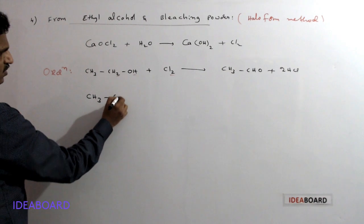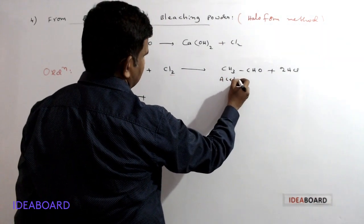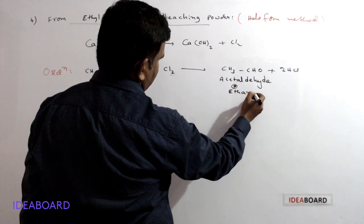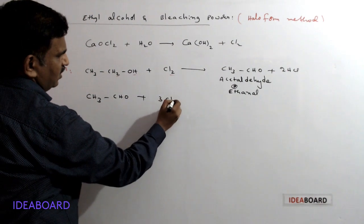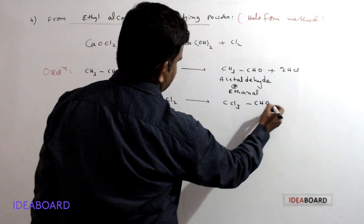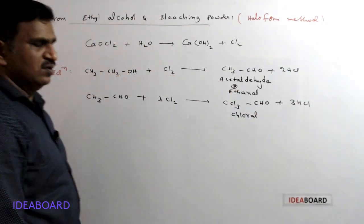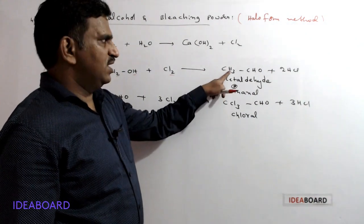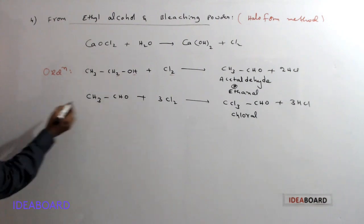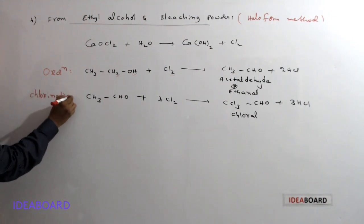In the second step, CH3CHO (acetaldehyde, IUPAC name ethanal) reacts with 3 moles of chlorine. Three hydrogen atoms are replaced by chlorine atoms, giving CCl3CHO plus 3 HCl. This product is commonly called chloral or trichloroacetaldehyde. This process is called the chlorination process.